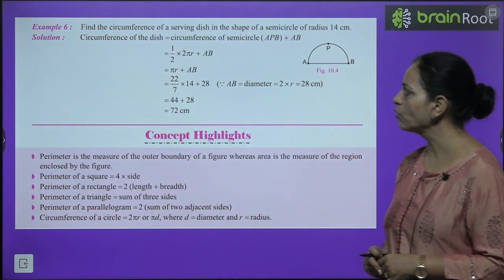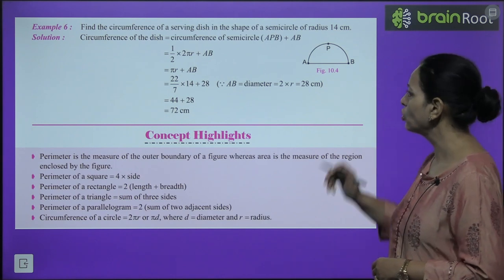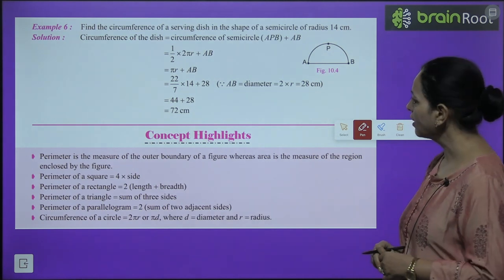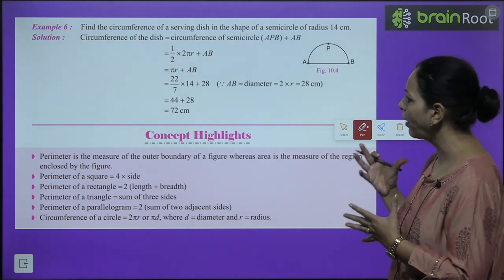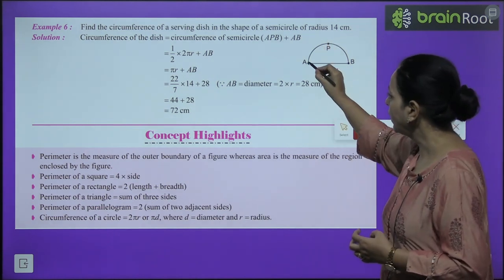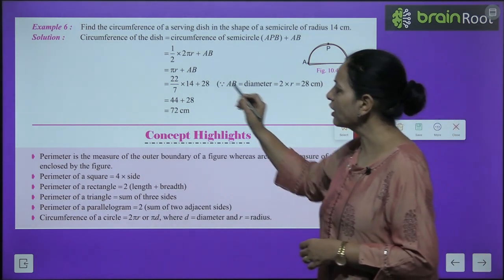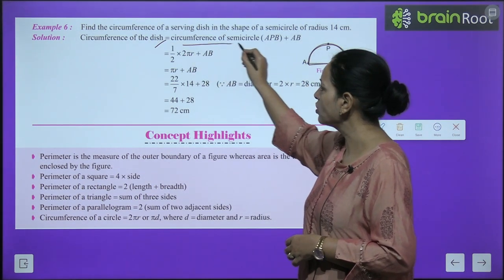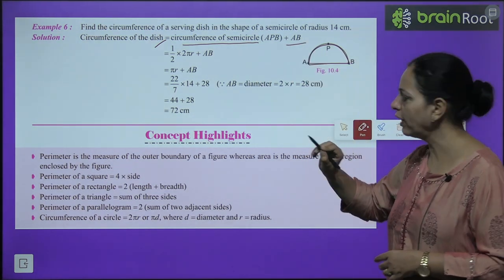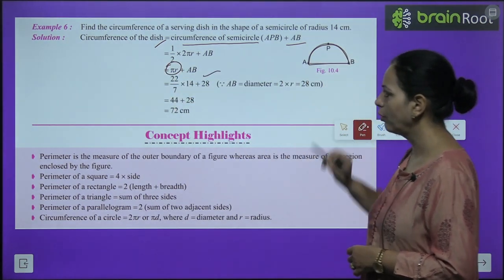Example 6: Find the circumference of a serving dish in the shape of a semicircle of radius 14 cm. The dish is semicircular — it has a curved part and a diameter. Circumference of dish = circumference of semicircle + diameter = πr + 2r. Here r = 14 cm, so 2r = 28 cm. Circumference = (22/7) × 14 + 28 = 44 + 28 = 72 cm.